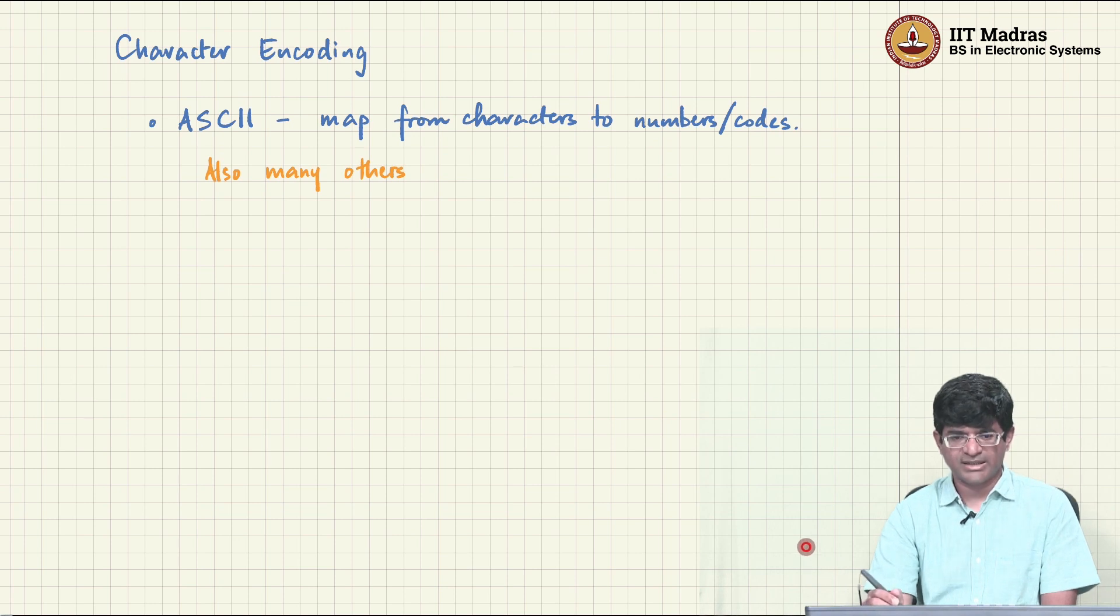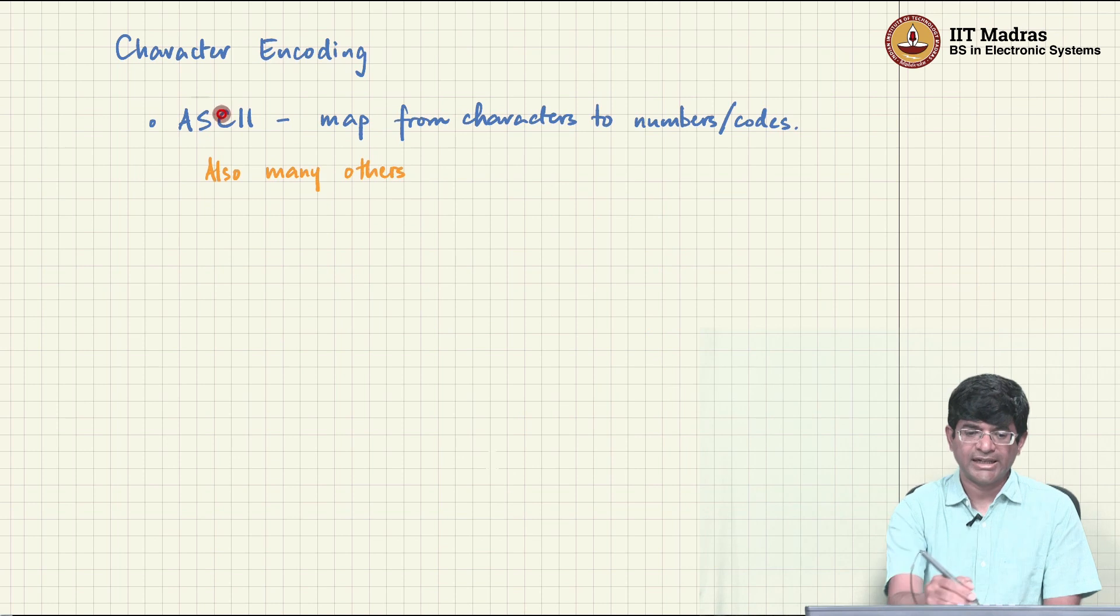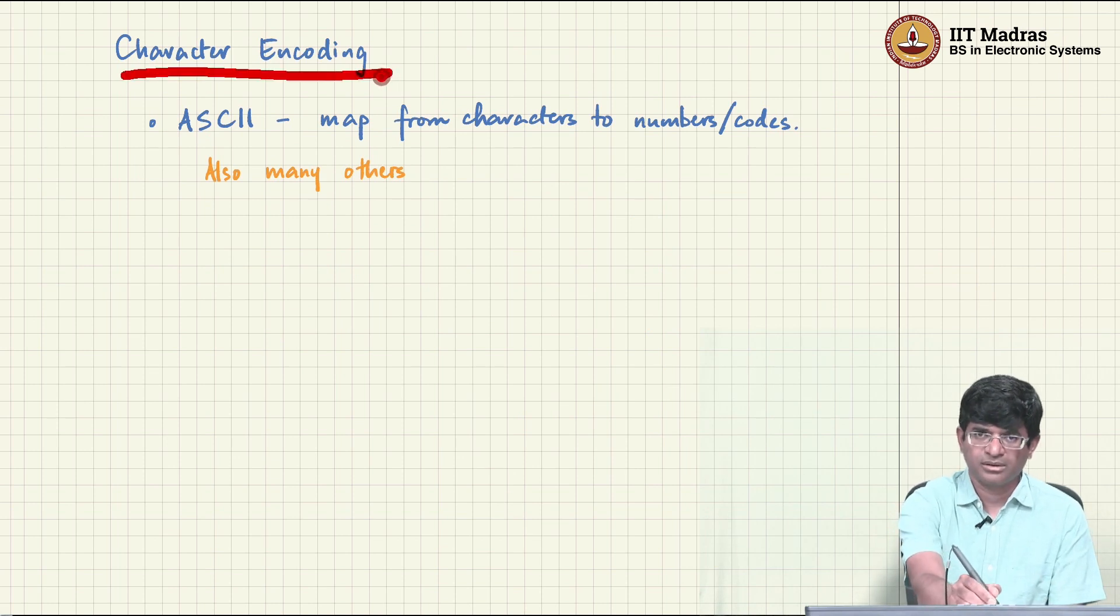There is in fact a standard. What we need is some kind of an encoding which basically says that I will take each of these characters and map them to a number. And the other way around, if I have a number I know that it represents this character. So it is a sort of mapping between the two, and that is called a character encoding.